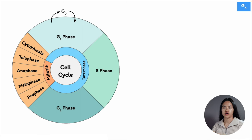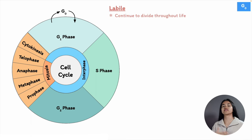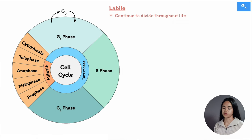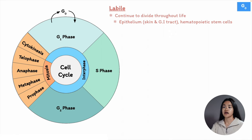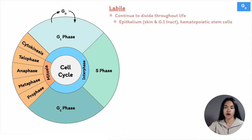Cells can be categorized in terms of their regenerative capacity into three groups: labile, stable, and permanent. Labile cells continue to divide throughout life — always dividing, always proliferating — and are never in G0. Examples include epithelial cells of the skin and the GI tract, as well as hematopoietic stem cells found within the bone marrow. This is why chemotherapy destroys these cells: it destroys dividing cells, and cancer cells grow and multiply rapidly. That's why side effects include hair loss, nausea, and vomiting — because it's destroying these labile cells.